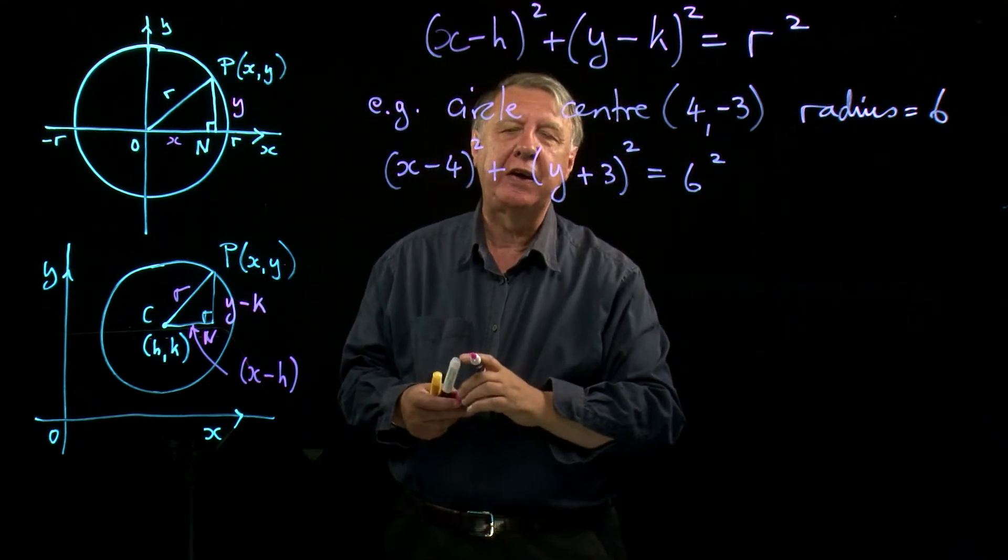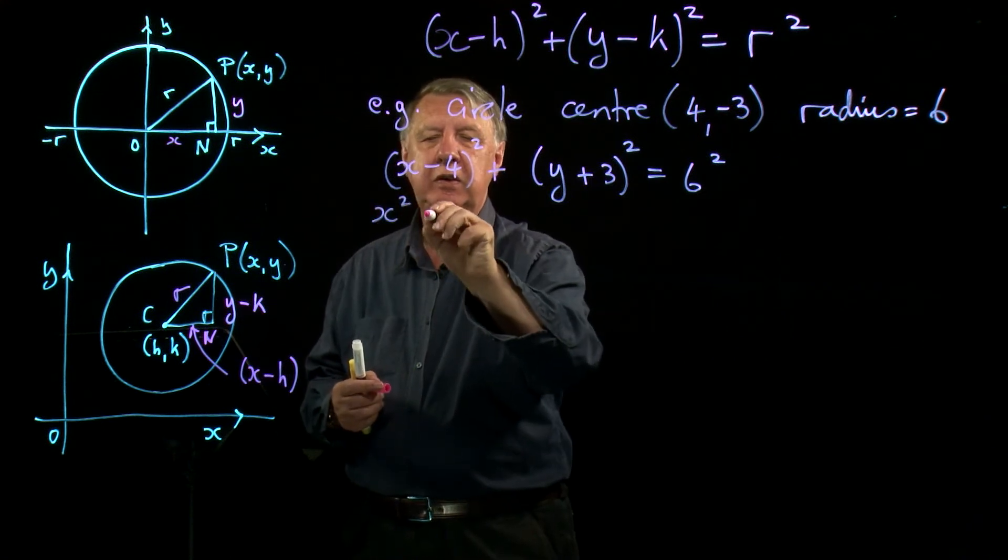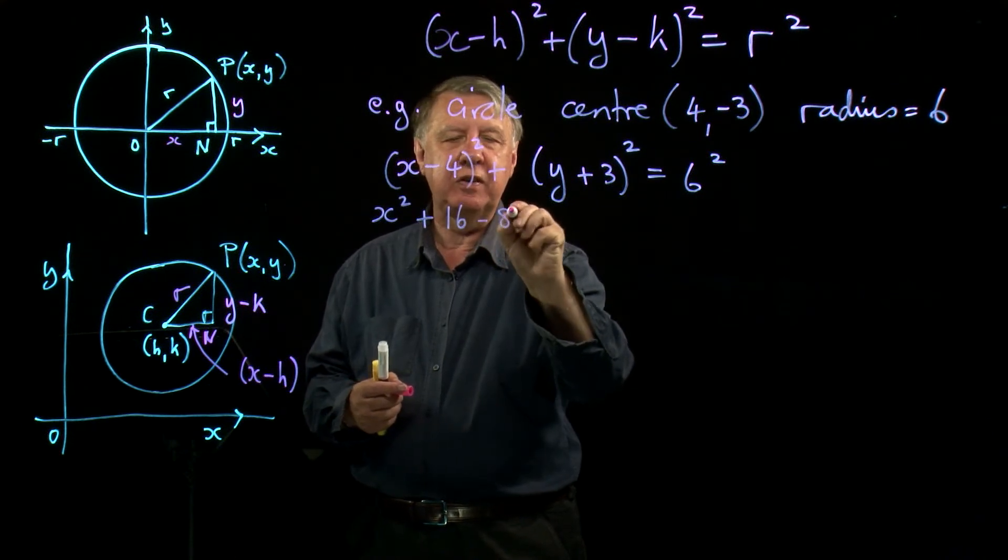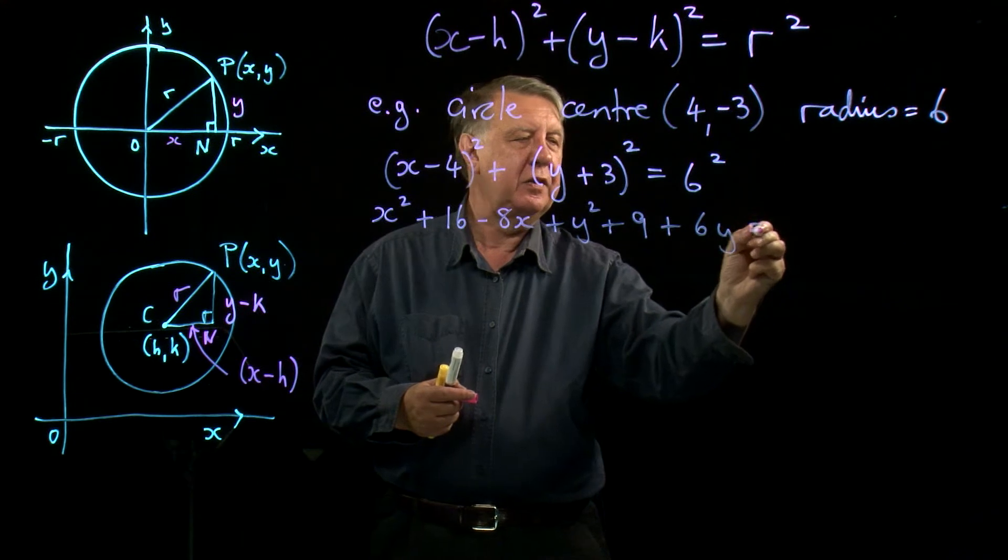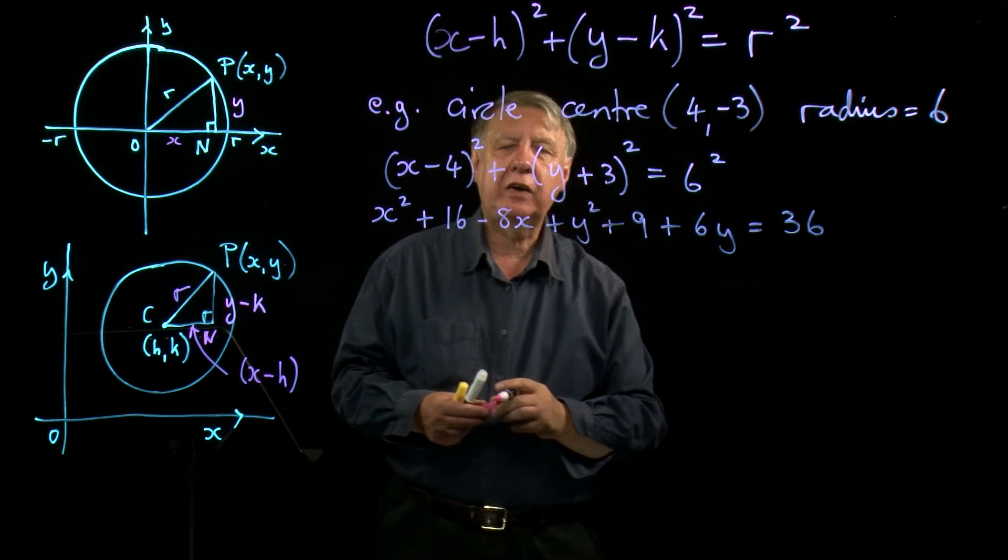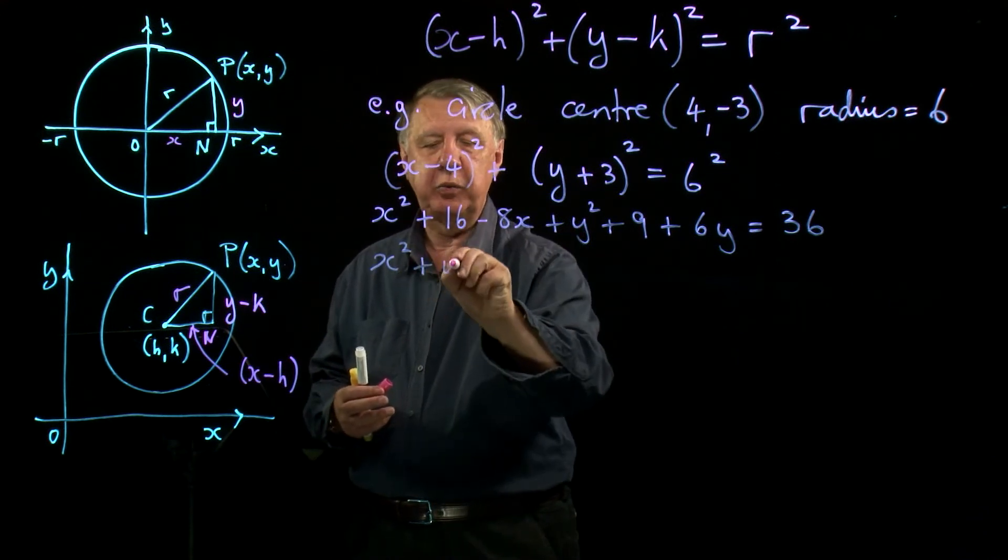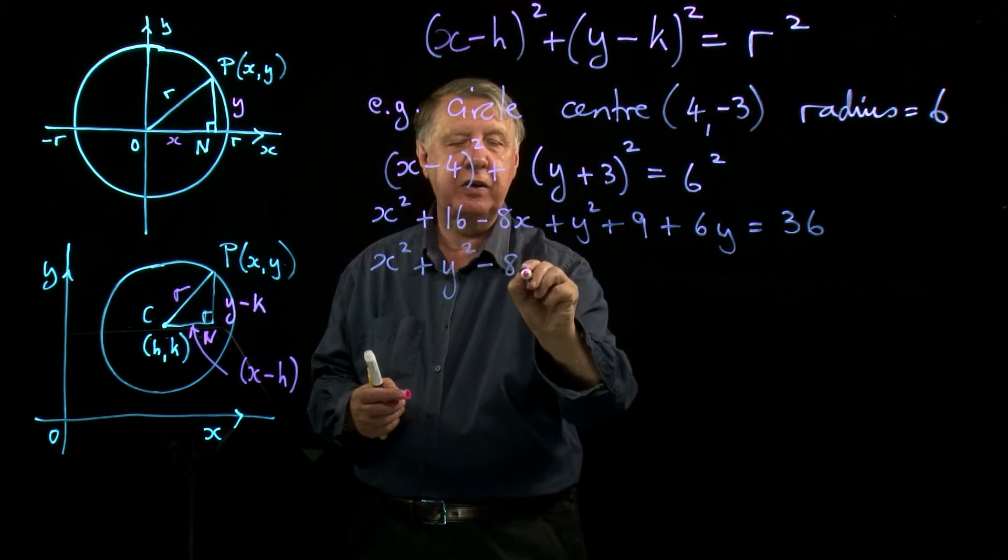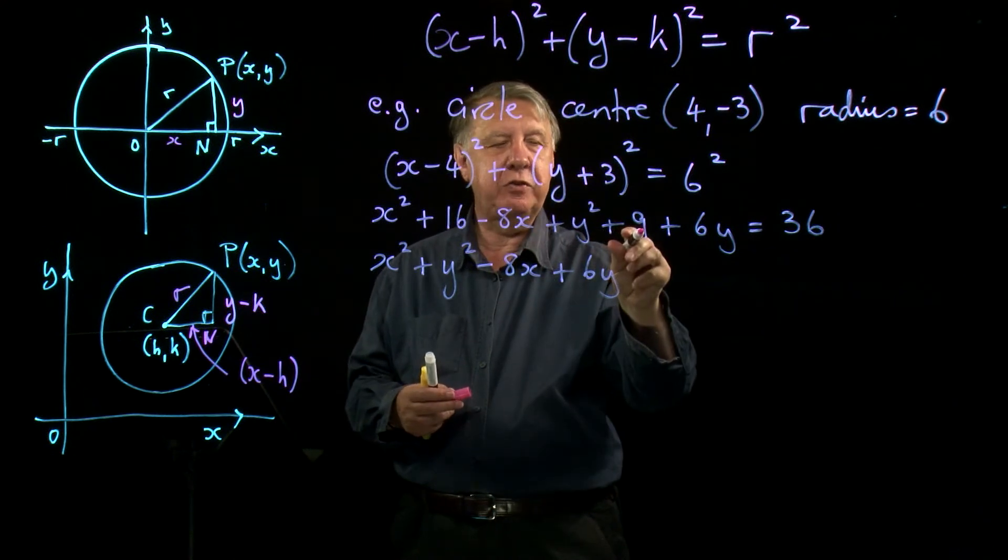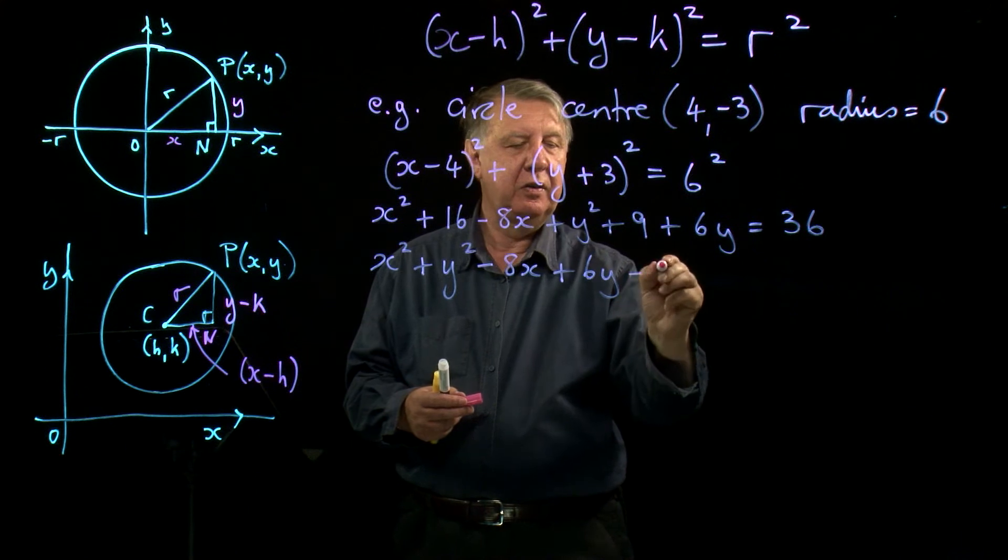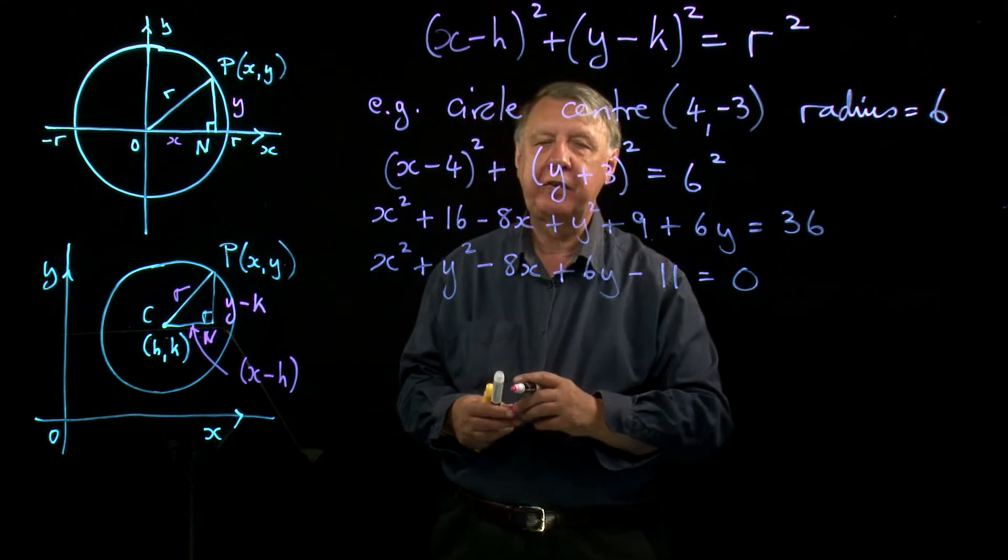But usually they'll say simplify it or expand it out in some way. So we would expand out the brackets. We have X squared plus 16, twice the product is take 8X, and then Y squared plus 9, twice the product here 6Y, and 6 squared is 36. And then the conventional way of simplifying this is to put everything on one side, to start with X squared and then follow it with Y squared, then the X term, then the Y term. And finally we put all the numbers together. 16 and 9 is 25, take away 36 is minus 11. And that's the equation written out in a simplified way.